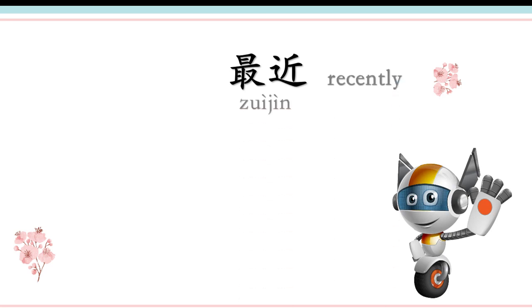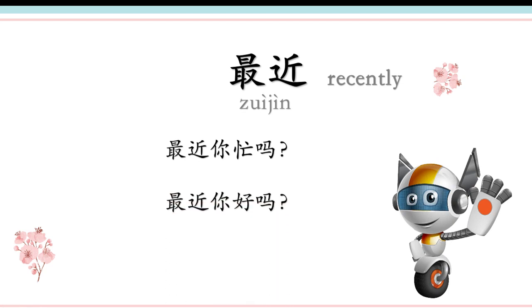Some students may say no, because there are so many new words. Okay, now let's come to the new words. Please look at the first one. 最近，最近。So we can make a sentence like 最近，你忙吗？你 is the subject, 忙 works as predicate. 最近，你忙吗？ — Are you busy recently? 最近，你好吗？ — How are you recently?